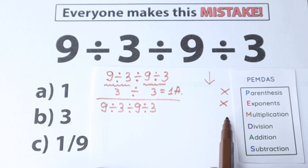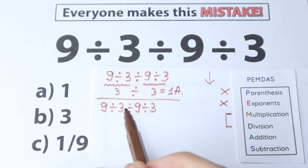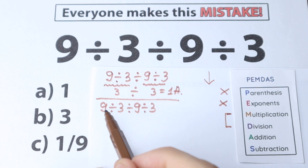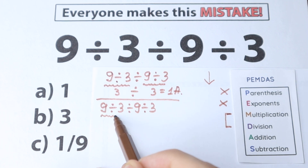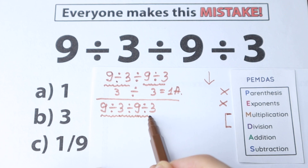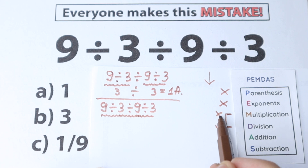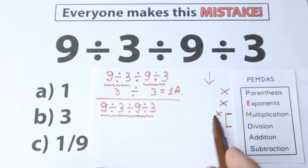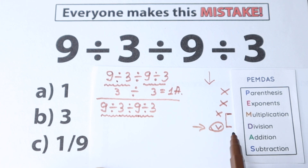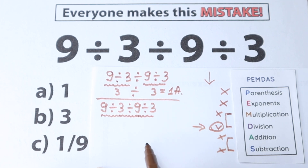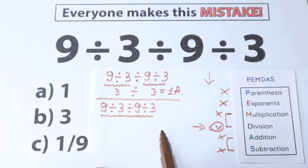The next step is the multiplication and division group — these are one common group. Looking at our expression, we have division signs throughout; we don't have multiplication. So we don't have parentheses, exponents, or multiplication — we only have division. And we don't have any addition or subtraction either. We have only the division part.